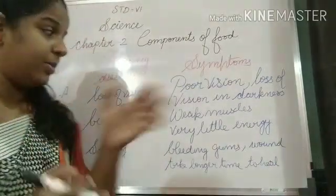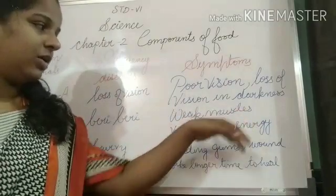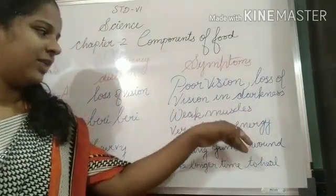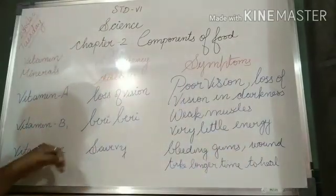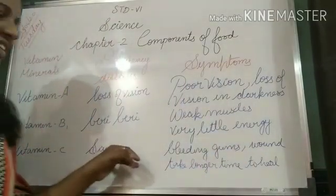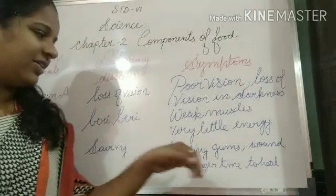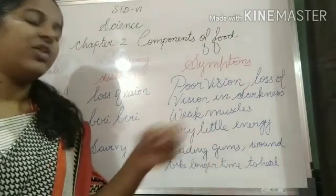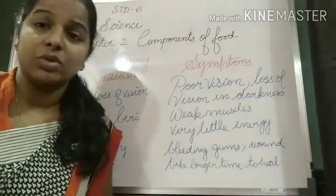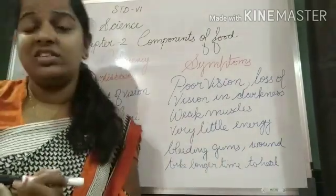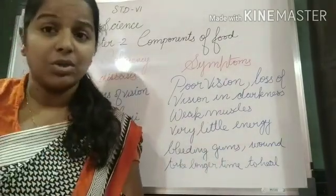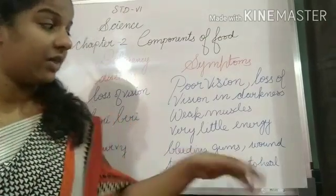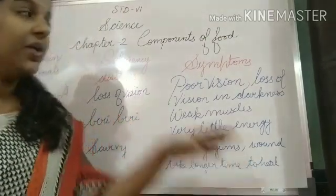Vitamin C deficiency causes scurvy. Scurvy is the disease where bleeding of the gums occurs and wounds do not heal quickly — they take a very long time to heal.